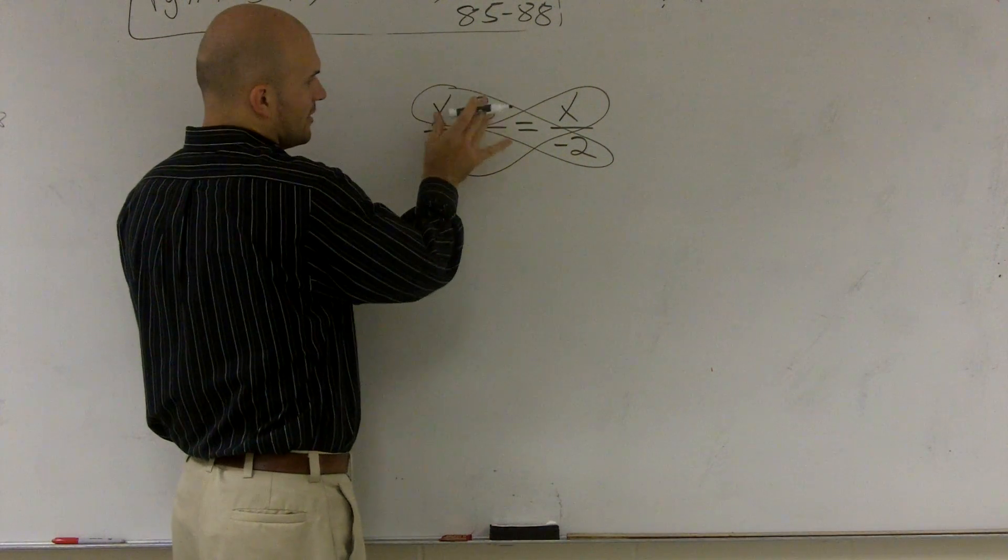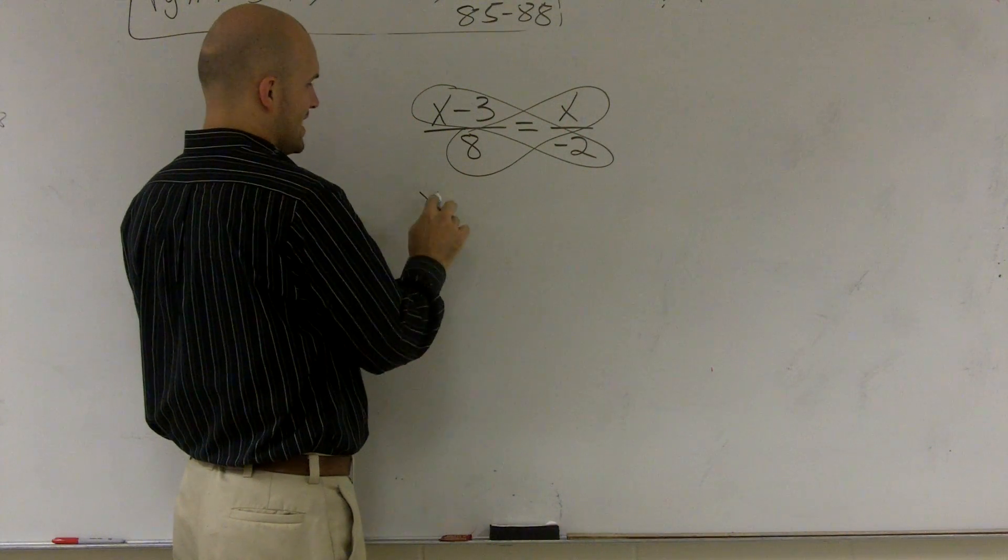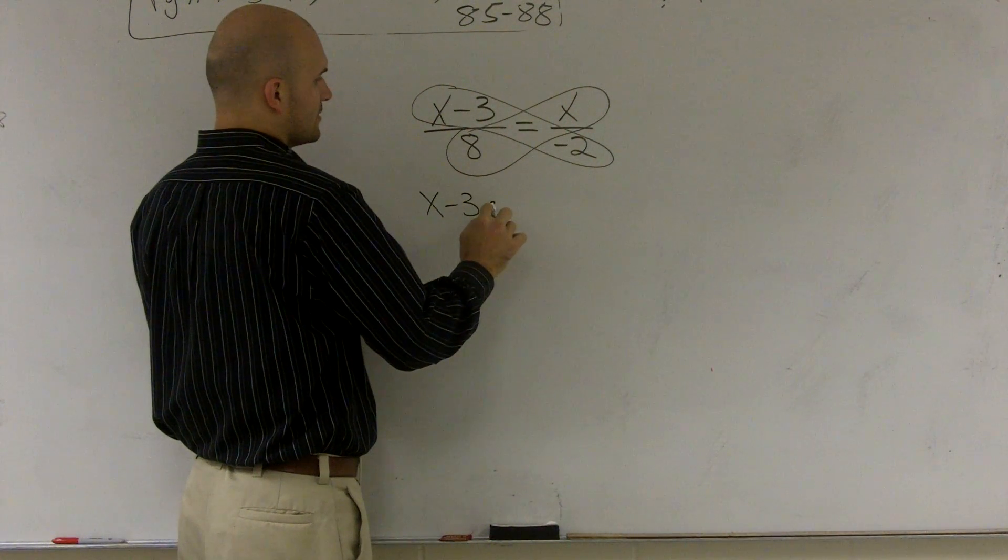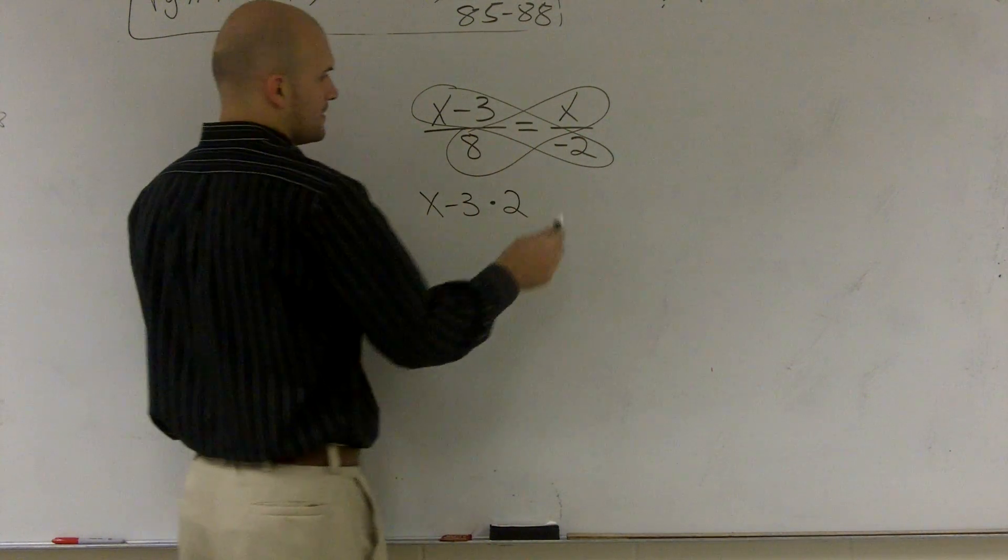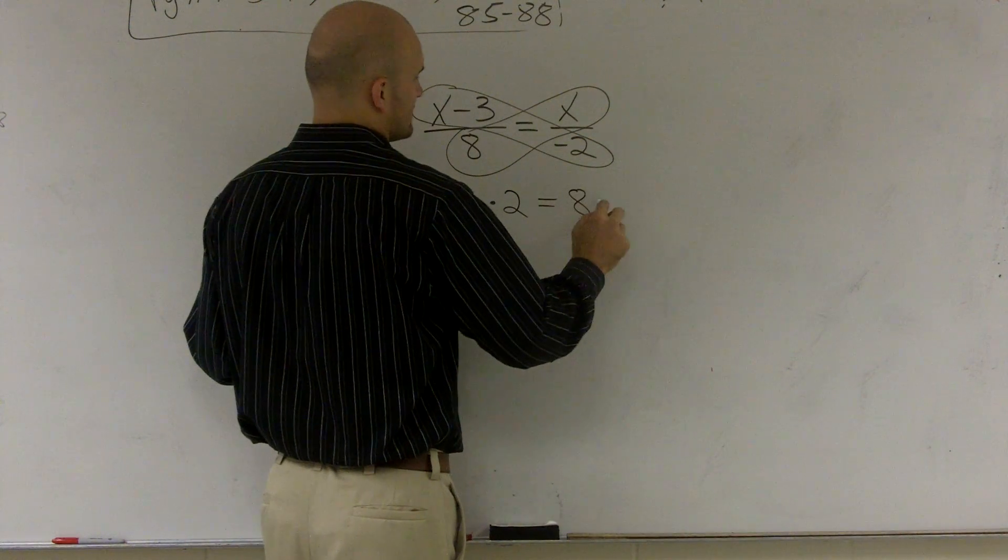where I'm going to take cross products. So it's going to be x minus 3 times negative 2 is equal to 8 times x.